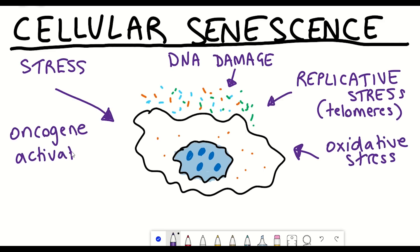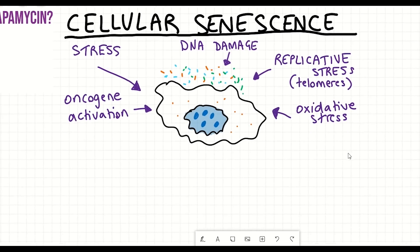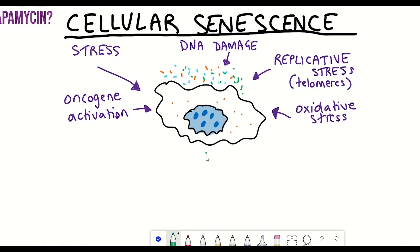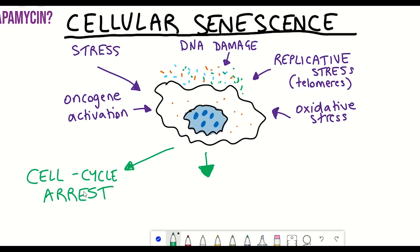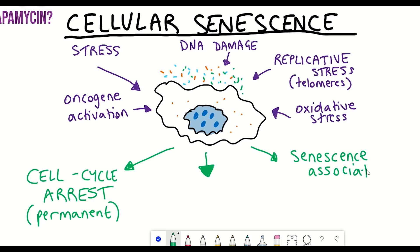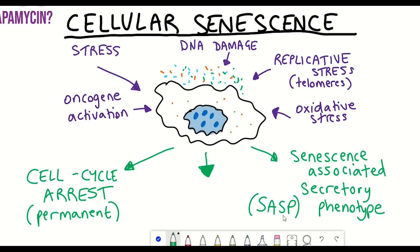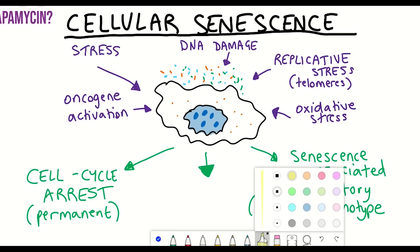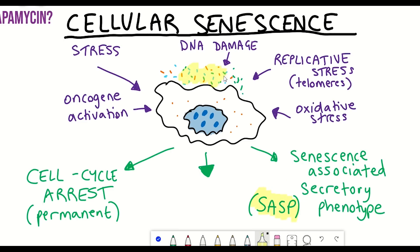Irrespective of the inducers of cellular senescence, there are some common outcomes. The first key response is a cell cycle arrest — the cell stops dividing — and this arrest is permanent. The second shared response is the secretion of a variety of different factors referred to as the senescence-associated secretory phenotype, or the SASP, as it's more commonly referred to.